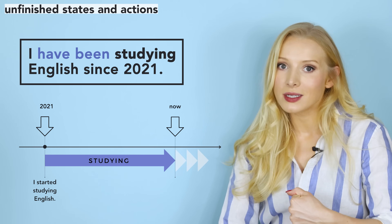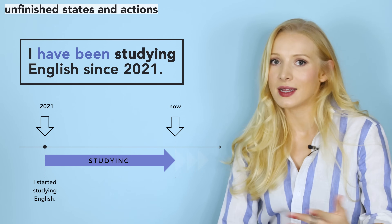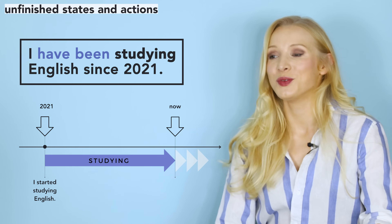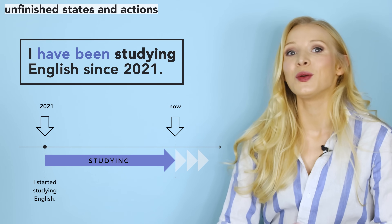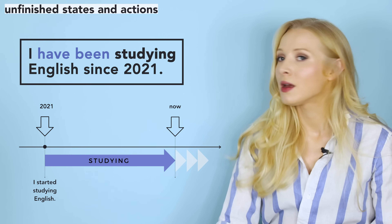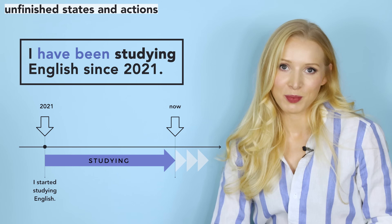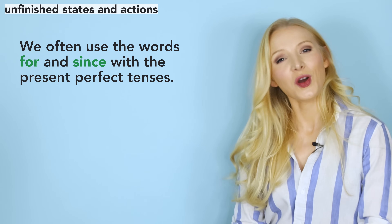We use have and has been plus -ing in the present perfect continuous to talk about actions that started in the past and continue up to the present. For example: 'I have been studying English since 2021' — I started in 2021 and have continued for three years until the present day. Using have been or has been doesn't give you any information about the future.